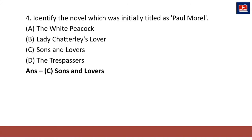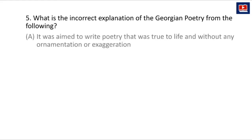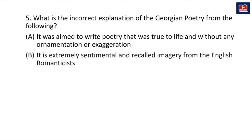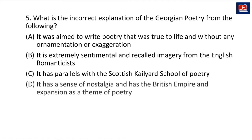The next question is: what is the incorrect explanation of Georgian poetry from the following? We have four different explanations and we have to find the incorrect one — three are correct and one is incorrect. Option A: it was aimed to write poetry that was true to life and without any ornamentation or exaggeration. Option B: it is extremely sentimental and recalled imagery from the English Romanticists. Option C: it has parallels with the Scottish Kailyard school of poetry. Option D: it has a sense of nostalgia and has the British Empire and expansion as a theme.